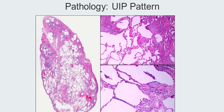So right away, when you see this under low power, you are strongly suspicious that this might be UIP. As you go under higher power, you see the transition between normal and abnormal lung,